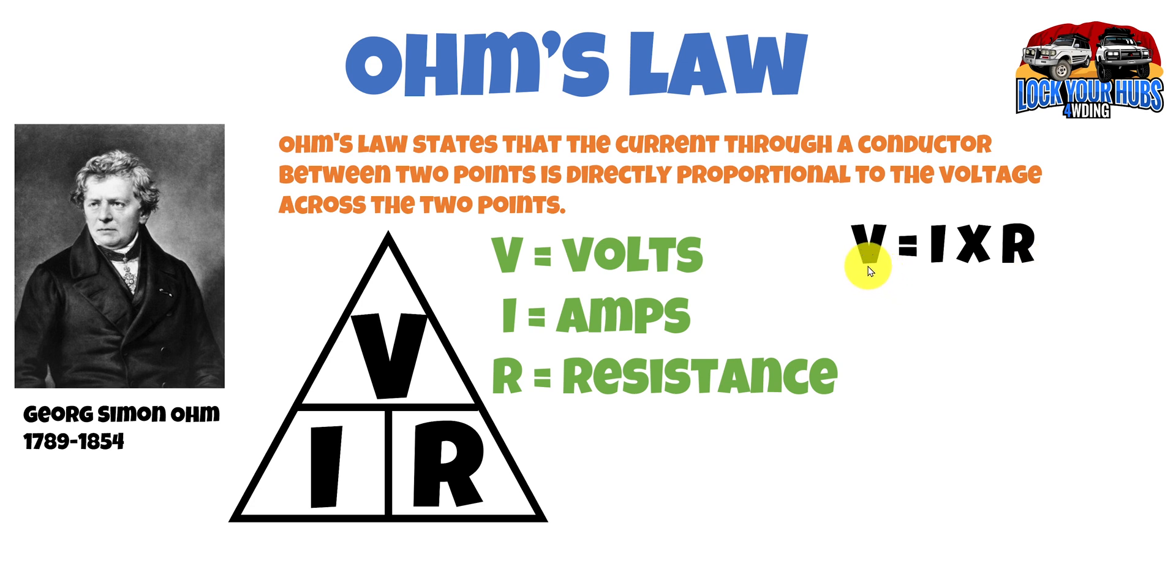Now the problem we have is we know the voltage, we know the amperage, but we don't know the resistance. And that's what we're trying to work out. So what we need to do is what's called transposition of the formula. We need to change it around so our resistance is the subject of this formula. And this is how we do it.